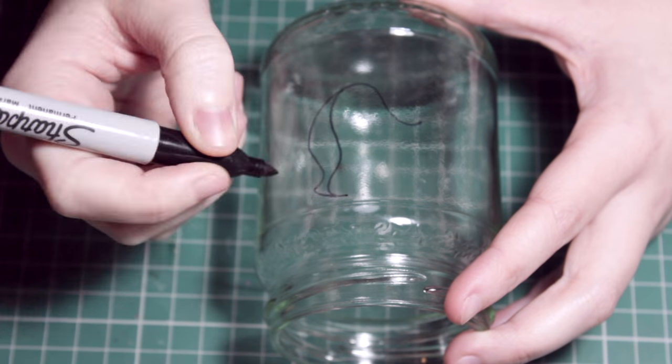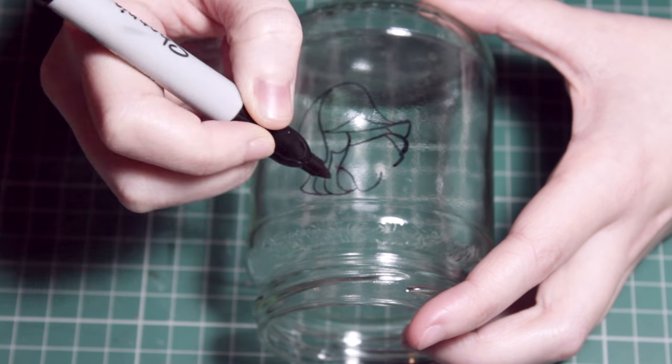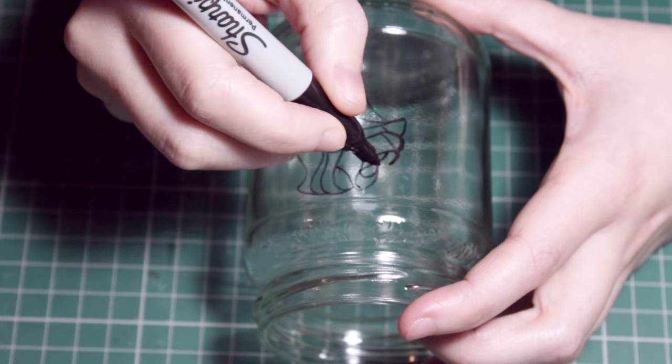They're really easy to wipe off, so if you mess up it's fine. You can either use your fingers or a cotton bud to wipe it away, but this is what we're going to do to get that stained glass effect.